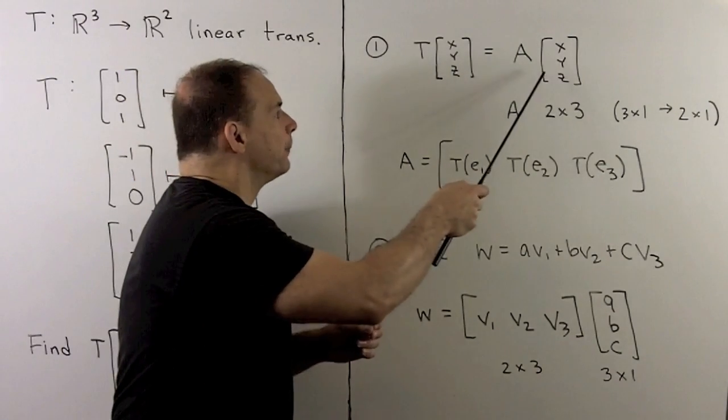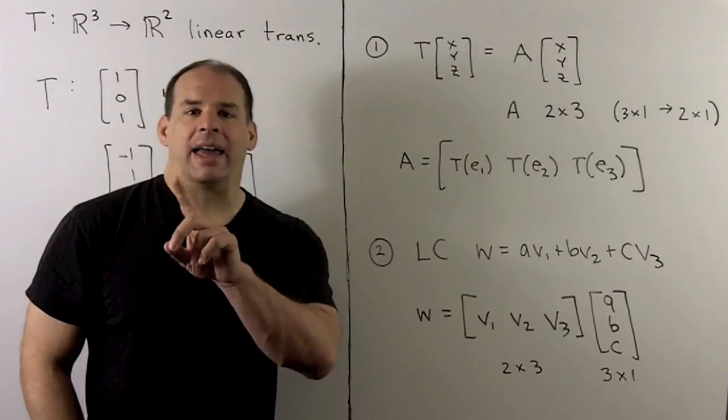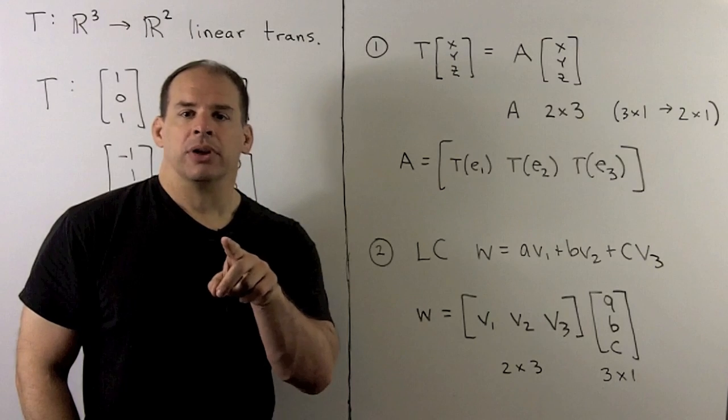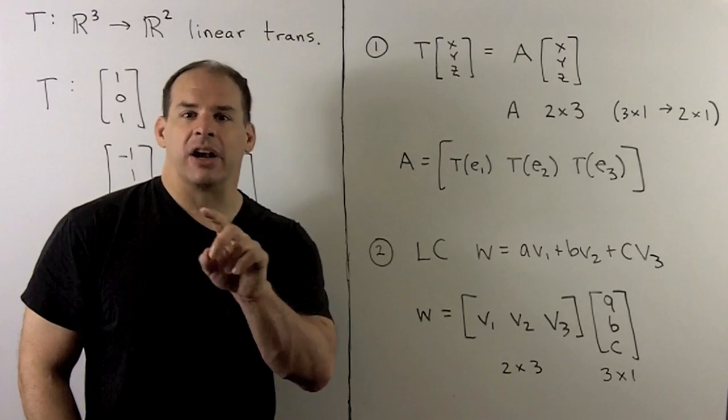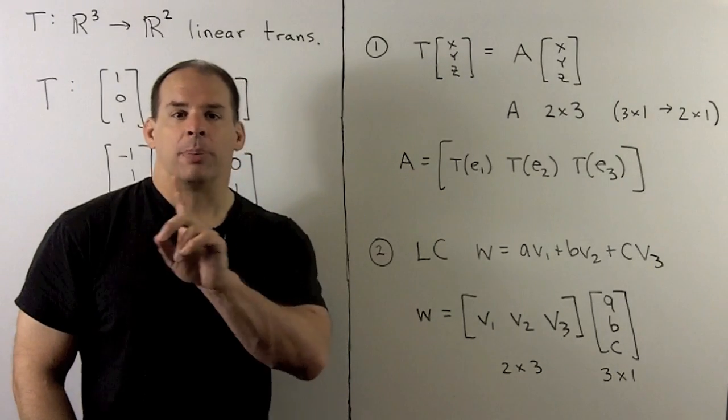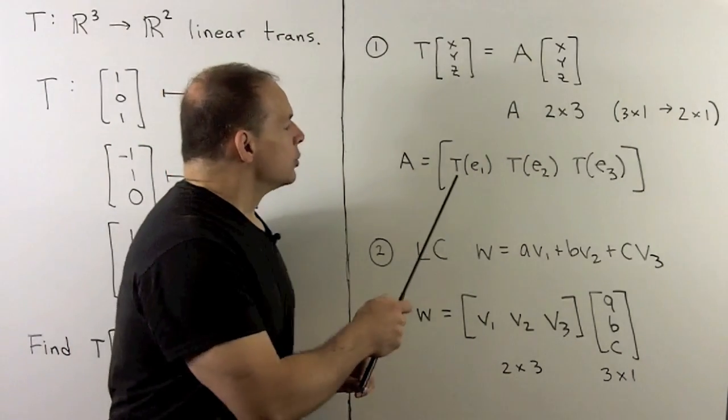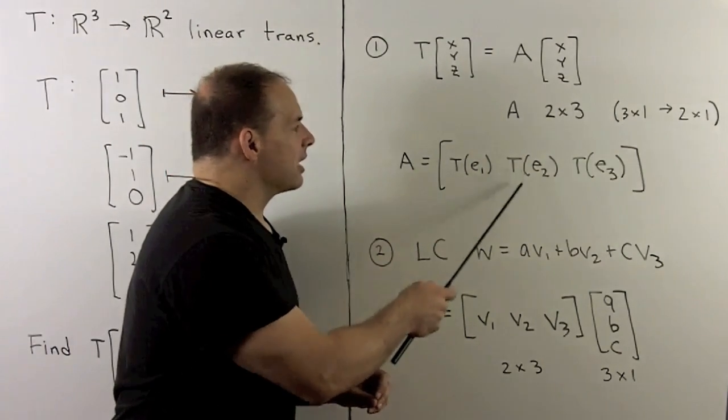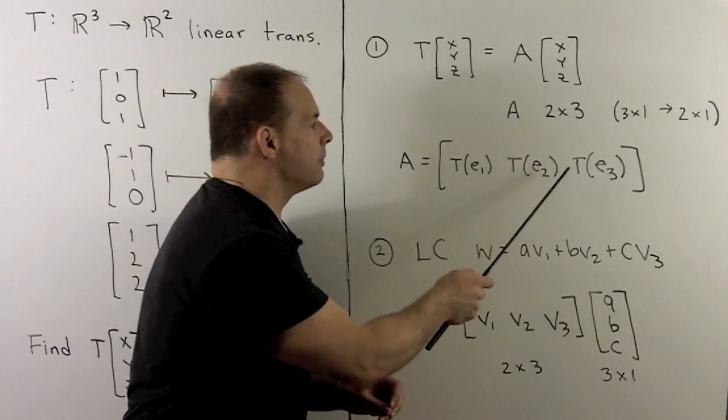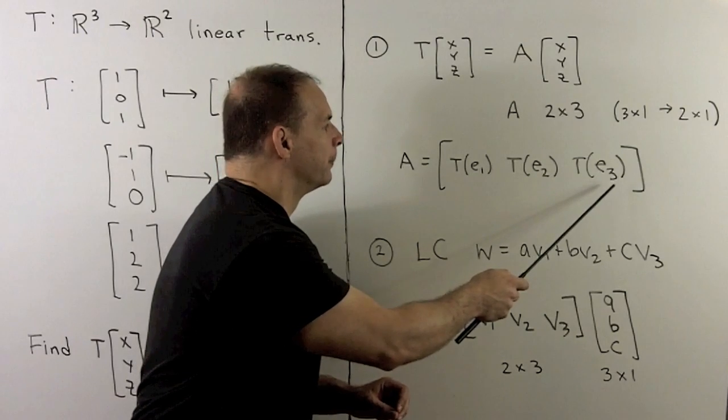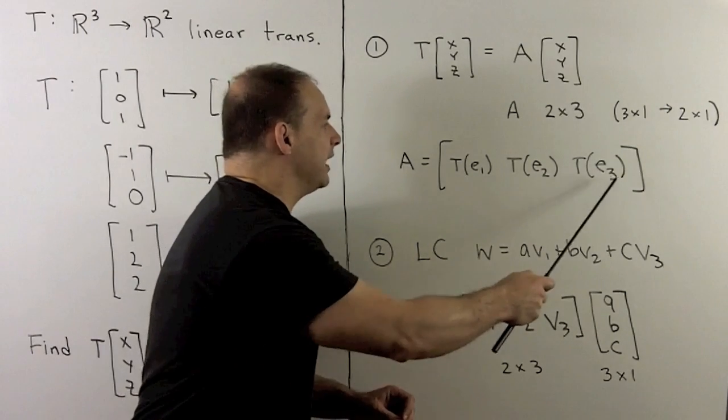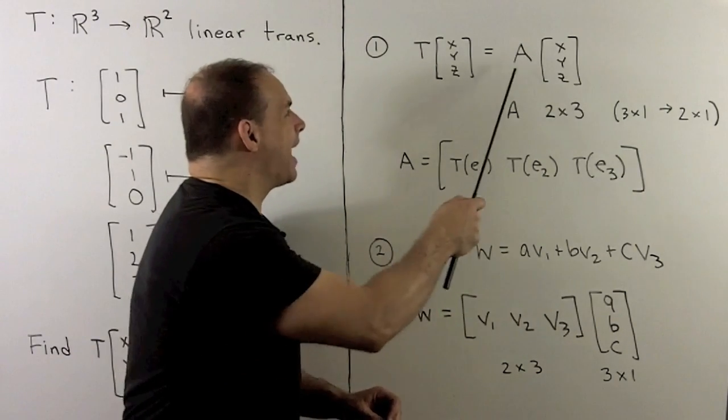The recipe for A: we'll apply A to three vectors, so we're going to need the three standard basis vectors. I'll apply T to each of those. The first column is T of E1, second column is T of E2, third column is T of E3. If we could find each of these, we have A, and then we have all of T.